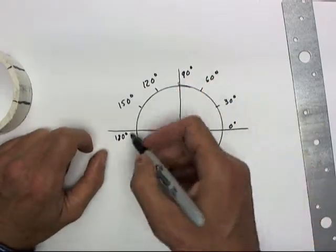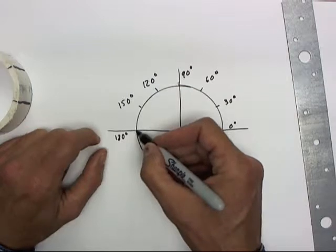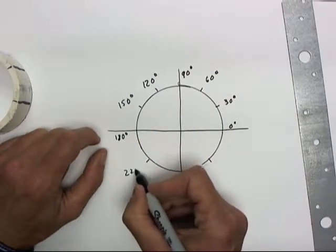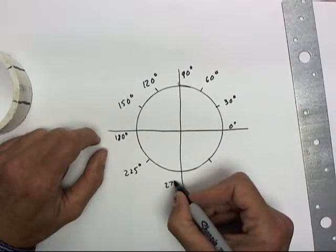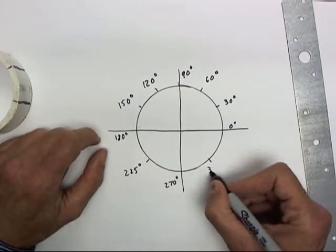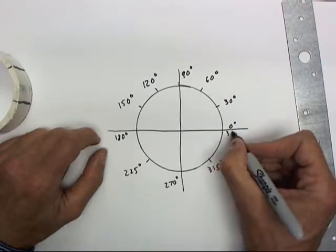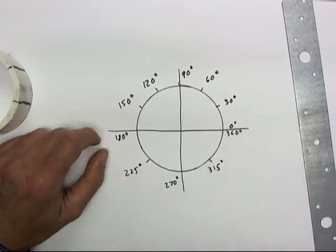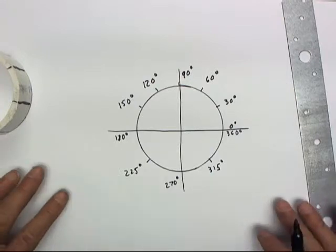Now, if I continue numbering my angles around the circle, I'm going to have to go 45 degrees to get from here to here, which is going to put me at 225 degrees, and another 45 puts me at 270, and then at 315, and coming back to our original 0 degree position. It's basically the same as our 360 degree position.